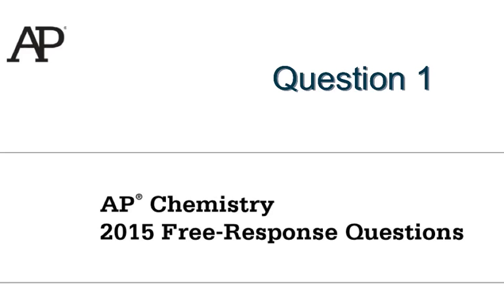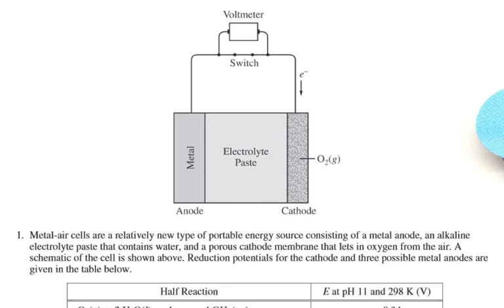I'm going to go through question one from the 2015 pre-response questions. We're starting off with this kind of an odd cell, a metal air cell. The idea here is there's oxygen going in over here, and there's a piece of metal over here. It says it's an alkaline paste, so it means it's very basic.